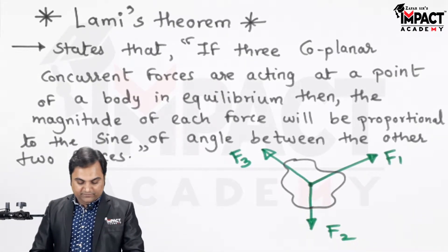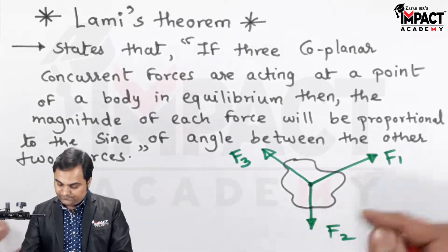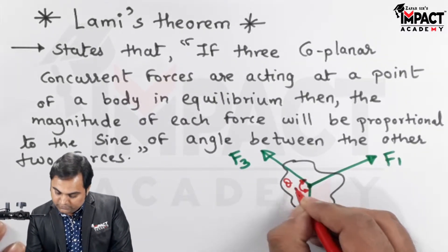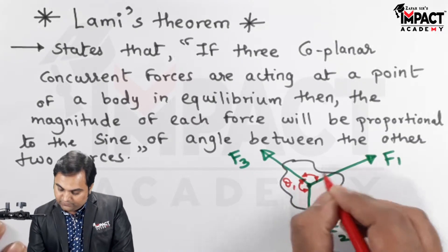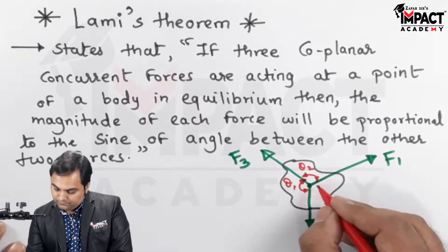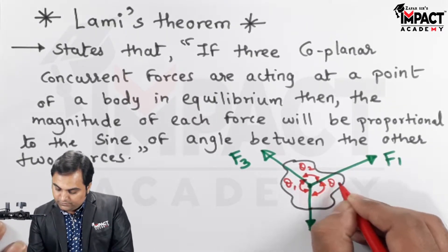Now the angle between F2 and F3 is theta 1. Here there is theta 2, and this is theta 3.